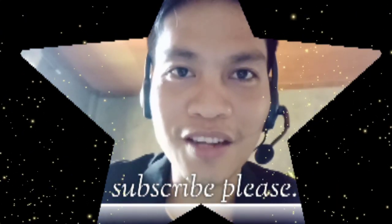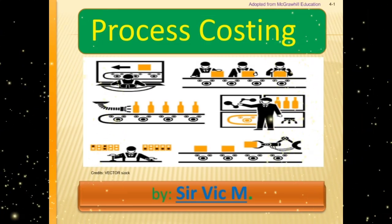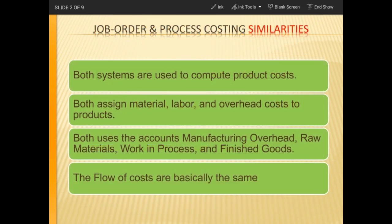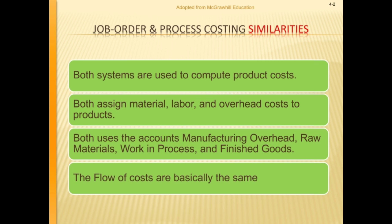Welcome back to KAdventure — please subscribe and hit the notification bell. We start with process costing. First, we compare job order and process costing. According to the similarities, both systems are used to compute product costs. Our ultimate goal when using costing systems is to compute product costs so that we can have the appropriate pricing technique or pricing method.